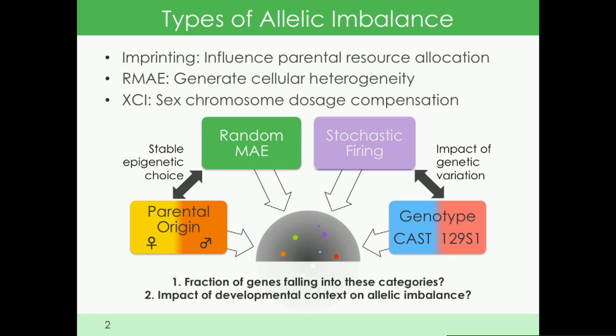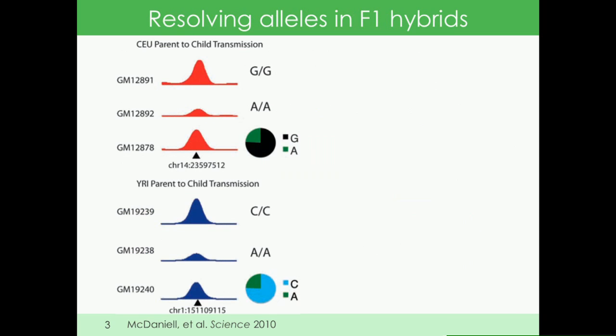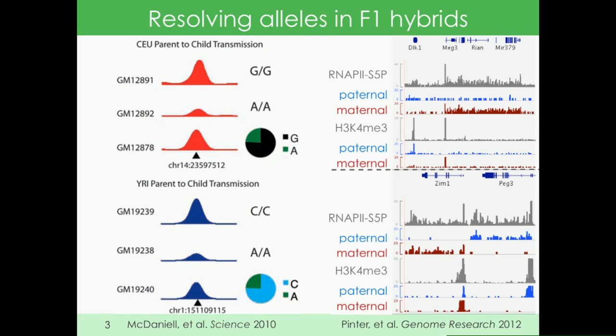We didn't do this in humans, which are outbreds. We used mice—a cross of two inbred mice. We used polymorphic F1 hybrids, which we had used previously to look at allelic imbalance in ChIP-seq studies.